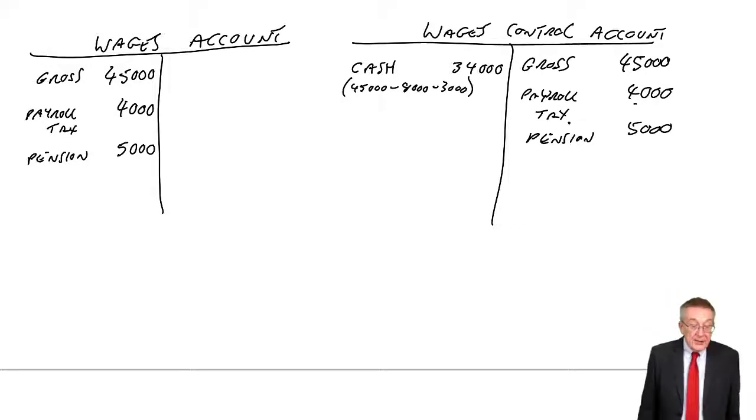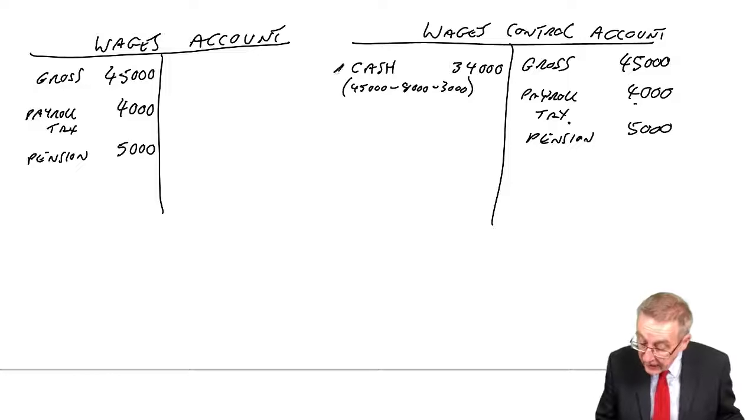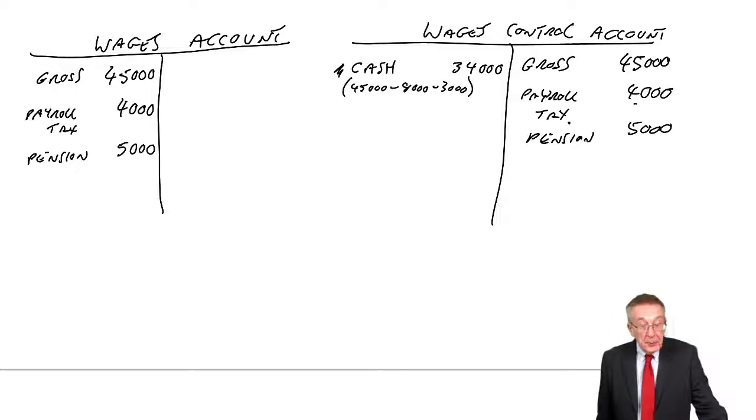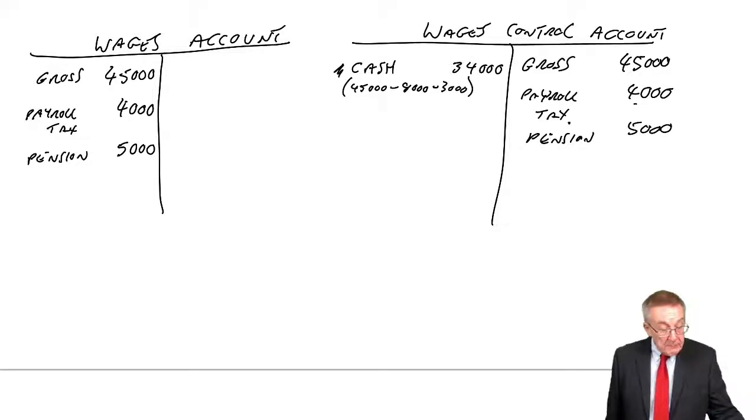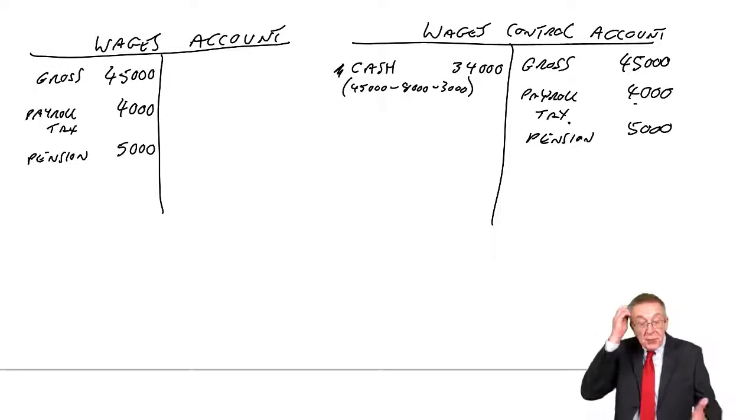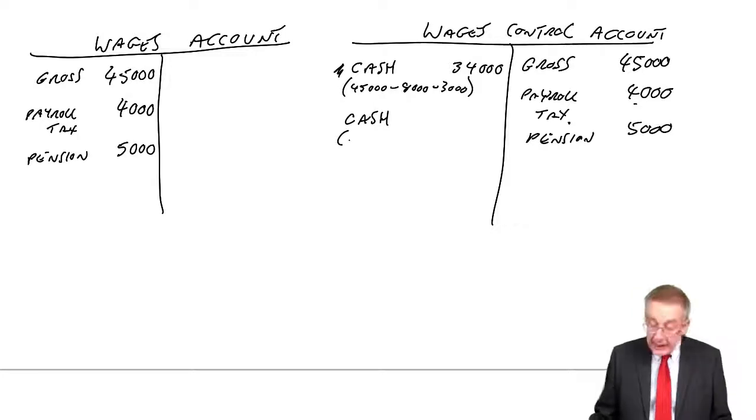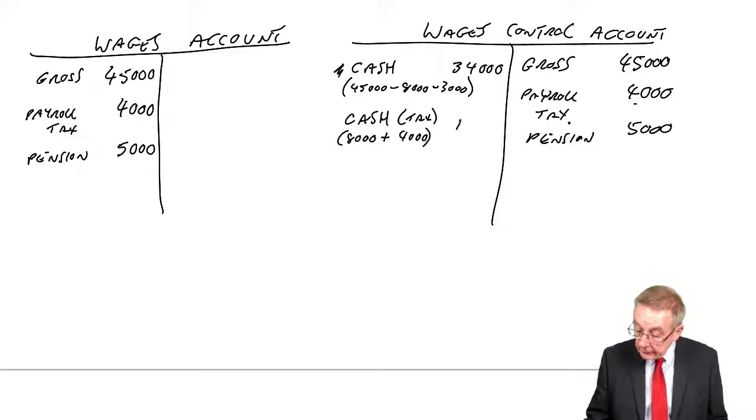On 15th of April, the tax authorities are paid the amount due. How much is owed to the tax people? The employee's payroll tax was $8,000. And in note 2, the employer's tax is $4,000. So there'll be a total of $12,000. So credit cash, debit the control account with the tax that's been paid. Again, the employees $8,000 and the employers $4,000. So credit cash, debit of $12,000.